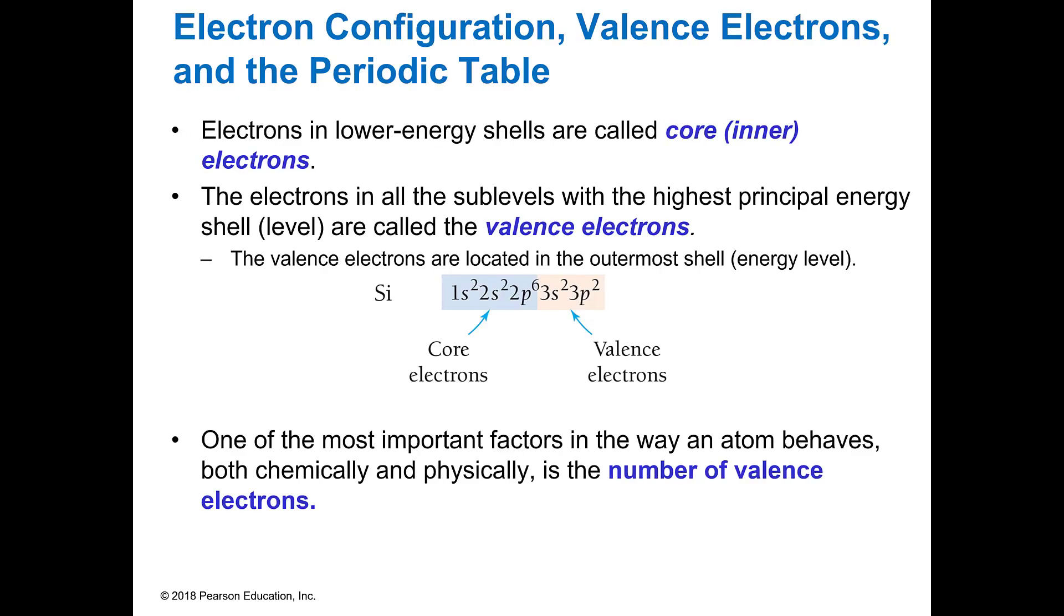When you're looking at electron configuration there are two major categories of these electrons. One is the core electrons or the ones that are in the inner shell, the lower energy shells, and the other are the valence electrons, those in the outer shell. For example, we've got silicon here. You go to the last filled P so it should have a P6 in it and then everything after that is considered to be valence electrons.